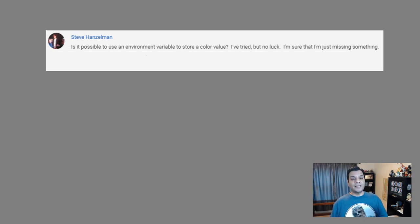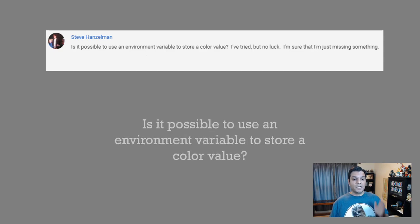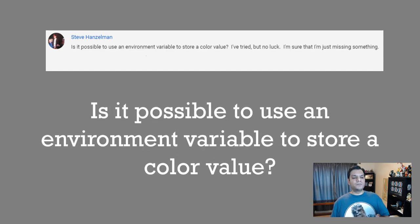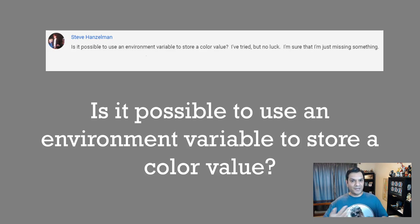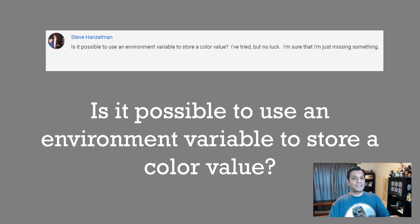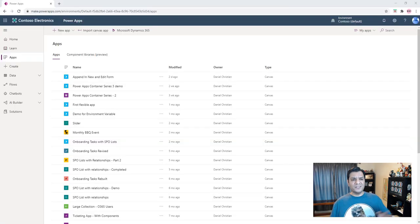The question was asked by none other than Steve Hanselman. He is a Power addict and his question was really good: 'Daniel, is it possible to use an environment variable to store a color value?' It's not as easy as it sounds, and I had to do a little thinking about this because in Power App Studio it uses RGBA values and you just can't drop a hex value in there. But after playing around and thinking outside the box, I figured it out.